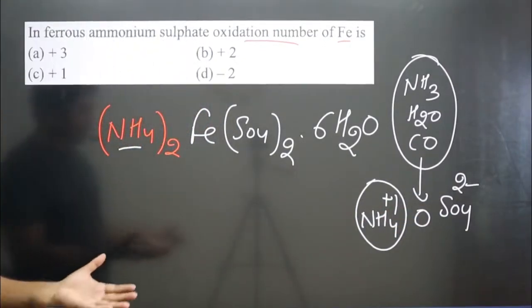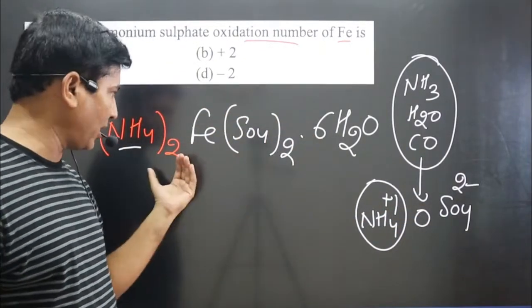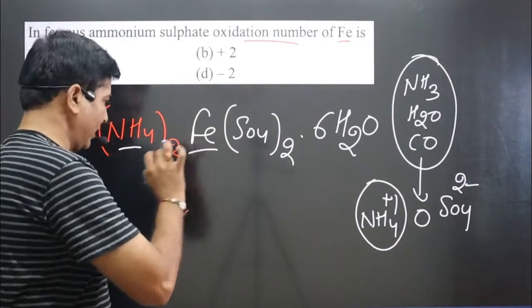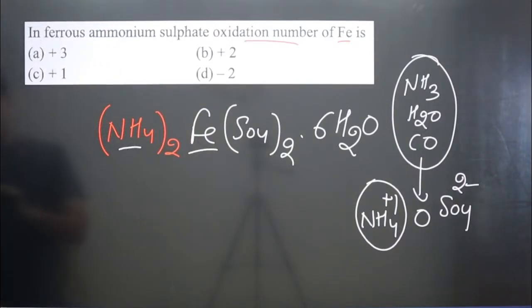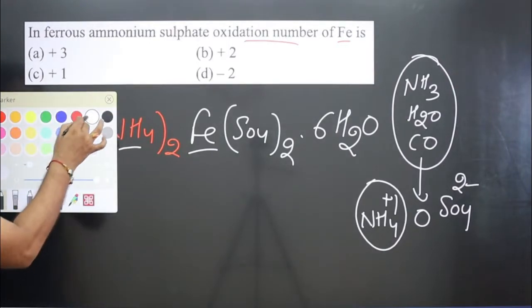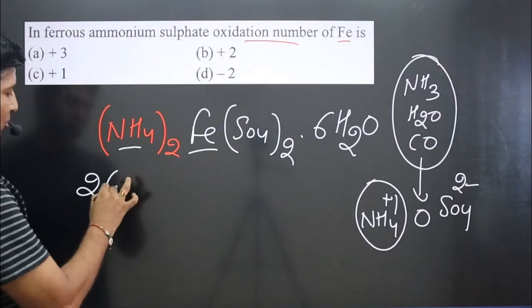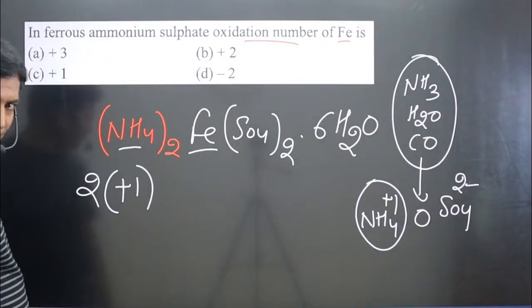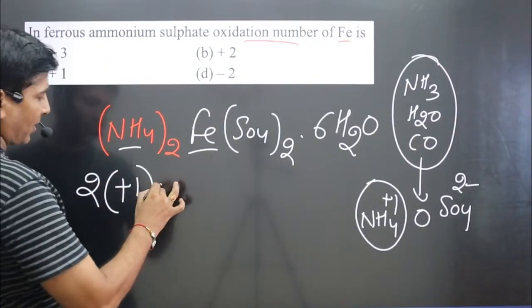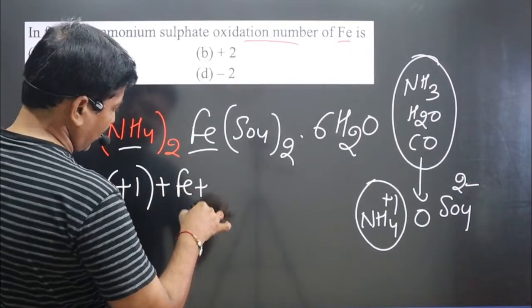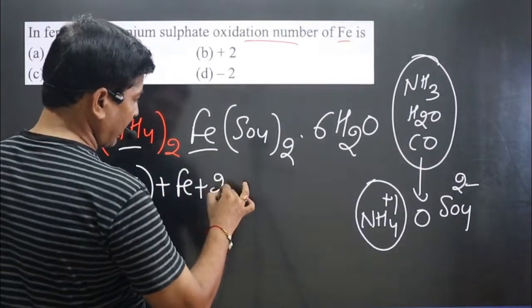Now with this information we can calculate the oxidation number of iron. Pay attention carefully. How many ammonium ions are there? There are two ammonium ions and each ammonium ion is equal to plus one charge, plus one oxidation number.